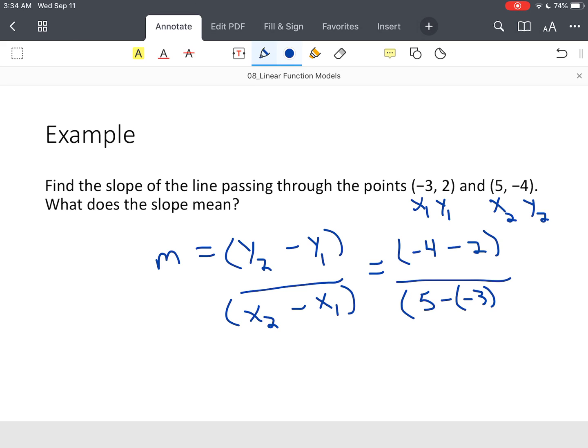Minus X sub one is negative three. Now, make sure you put that negative three in parentheses. The formula calls for a negative sign already. So you keep that negative sign in there, and you put negative numbers in parentheses just to help yourself out a little bit.